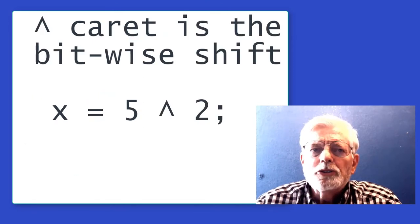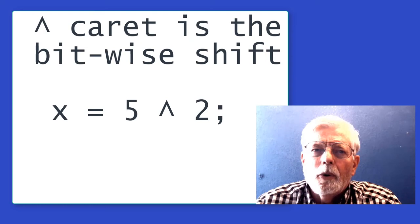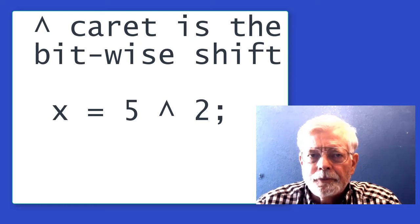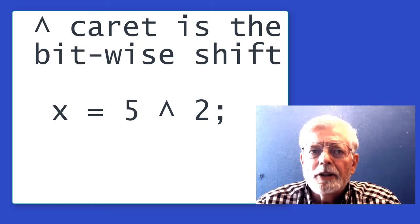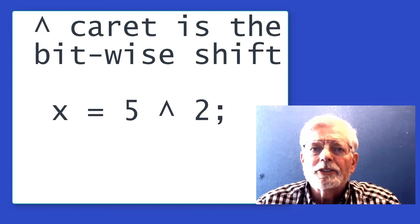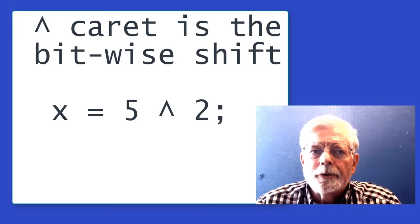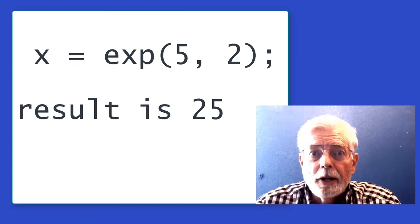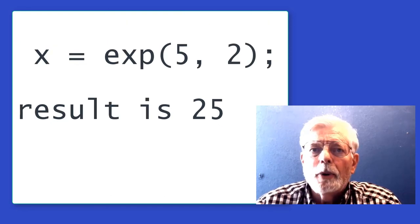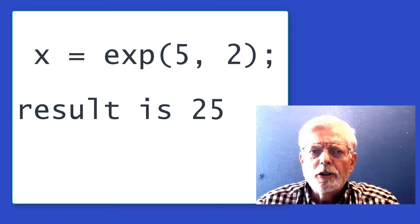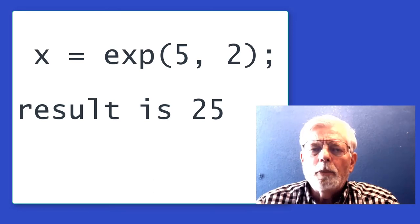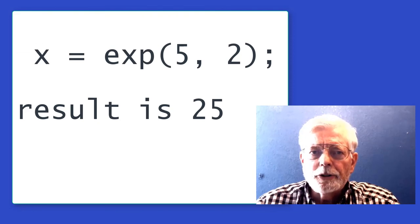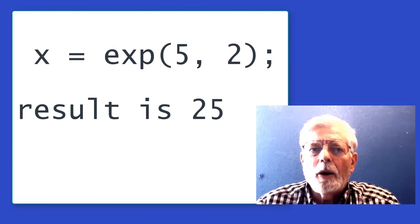Many languages use the caret or arrow operator for exponents. However, C, C++, and several other languages use the caret as the bitwise exclusive OR operator. C and C++ do not have an operator for exponents, but they can use the exp(x, y) math function to compute x to the power of y.